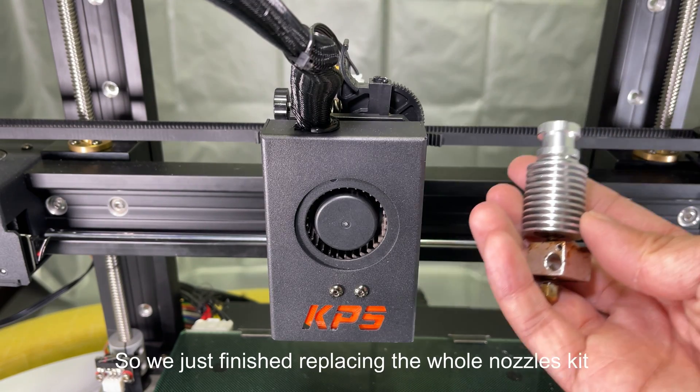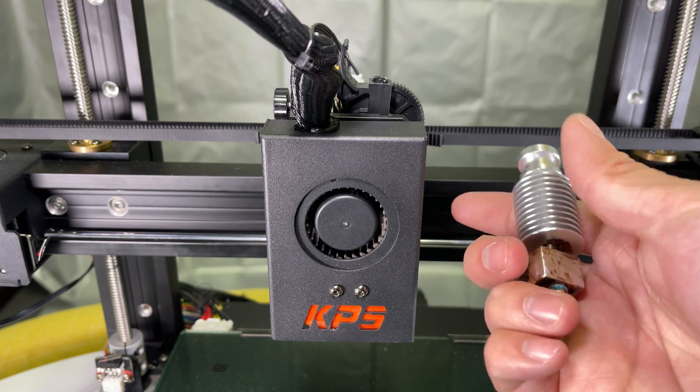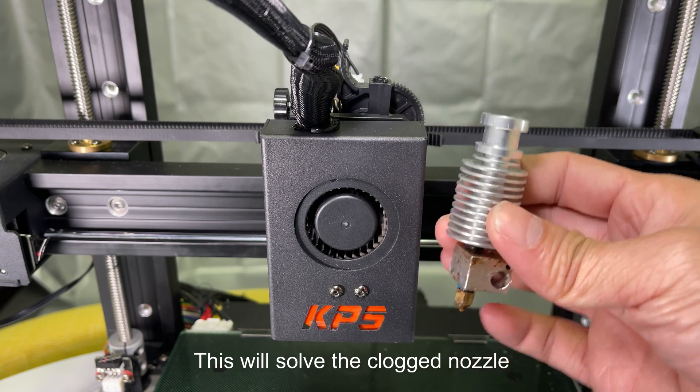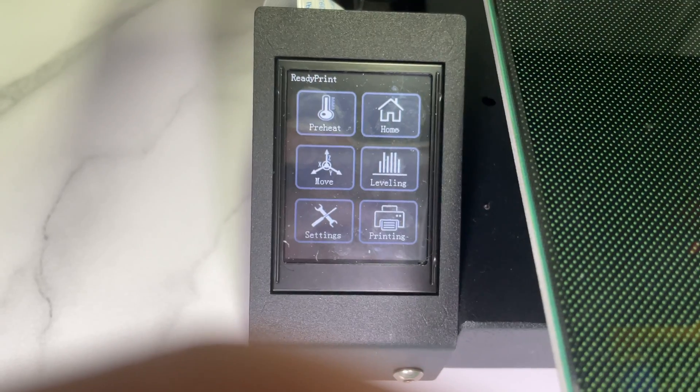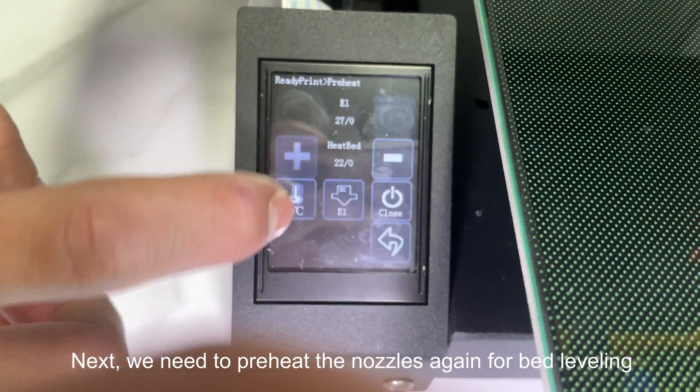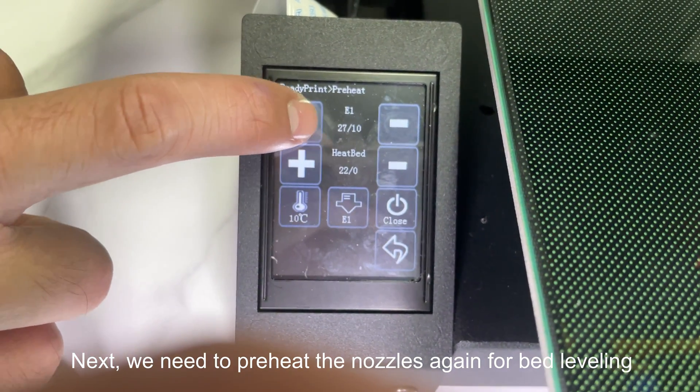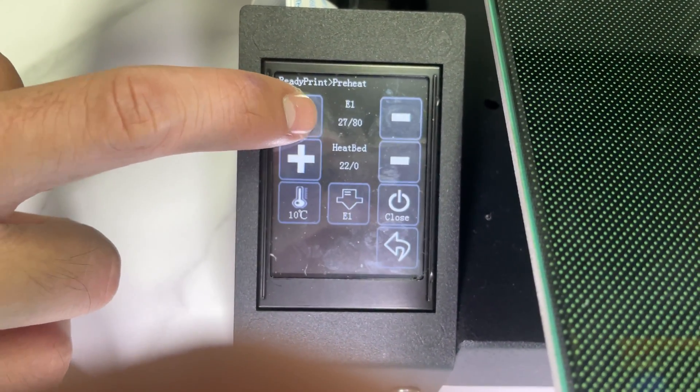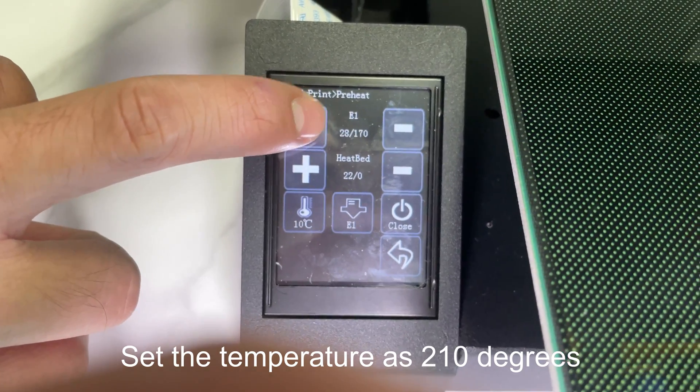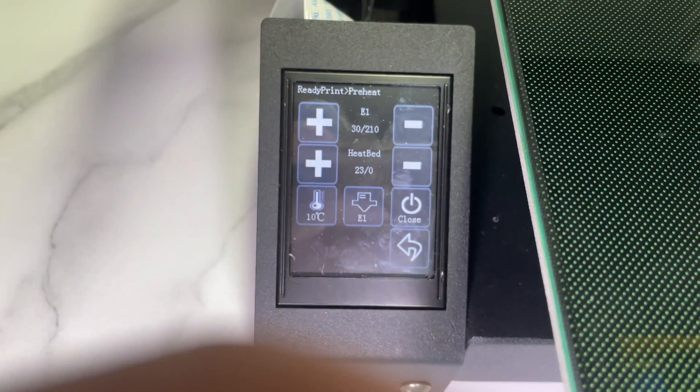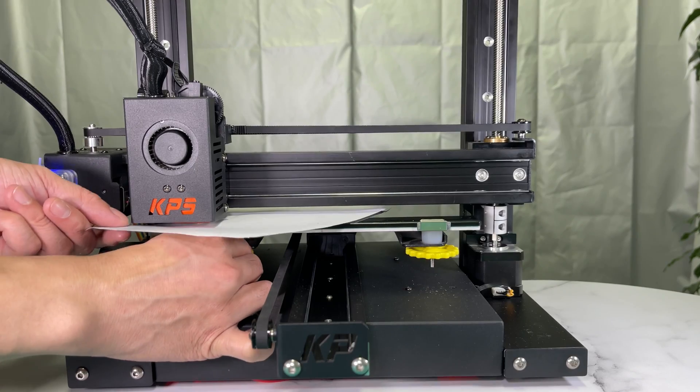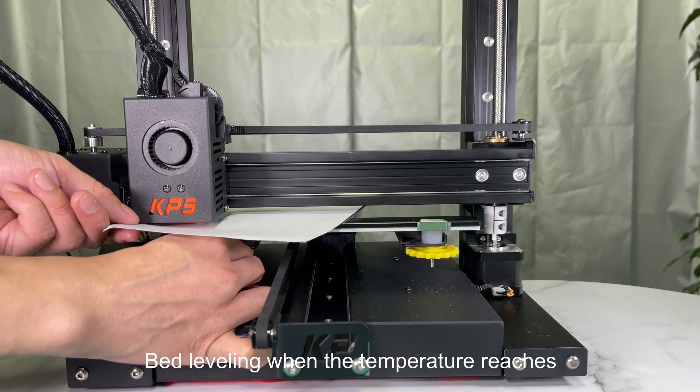So we just finished replacing the whole nozzles kit. This will solve the clogged nozzle. Next, we need to preheat the nozzles again for bed leveling. Set the temperature as 210 degrees. Bed leveling when the temperature reaches.